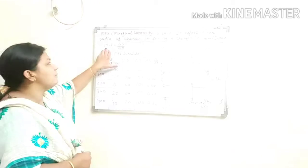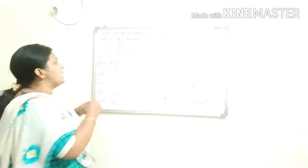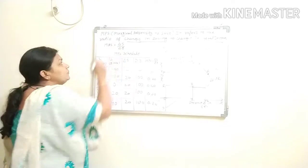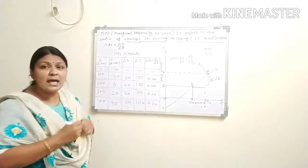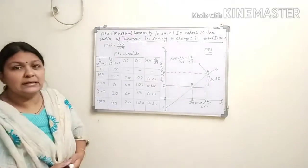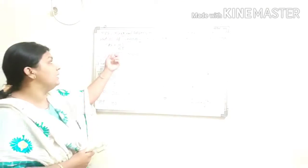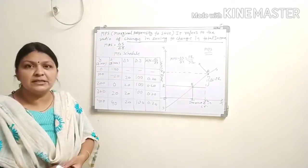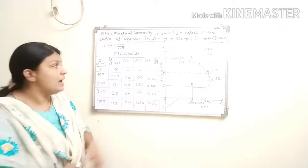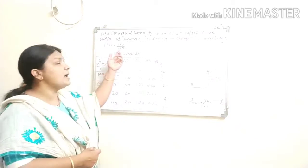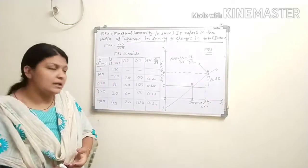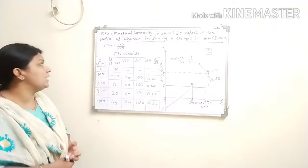So what is the formula of MPS? MPS equals delta S upon delta Y, where delta S means change in saving and delta Y means change in total income.